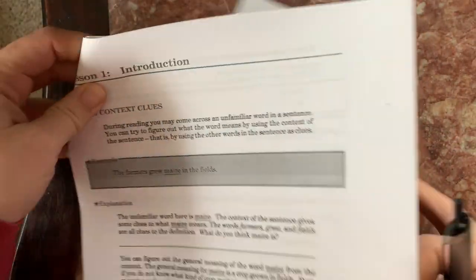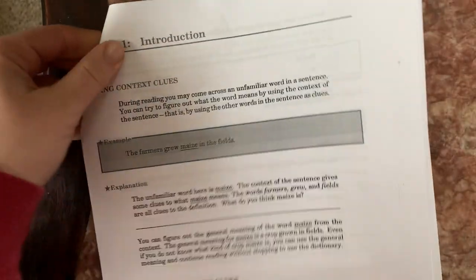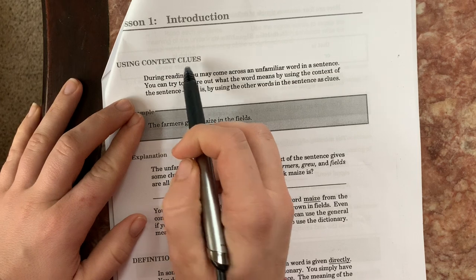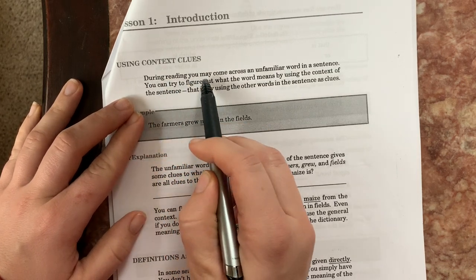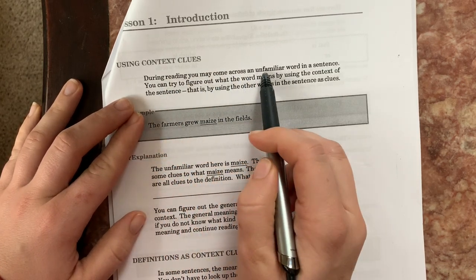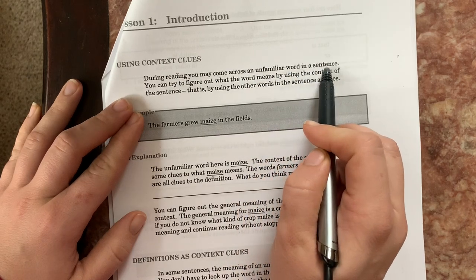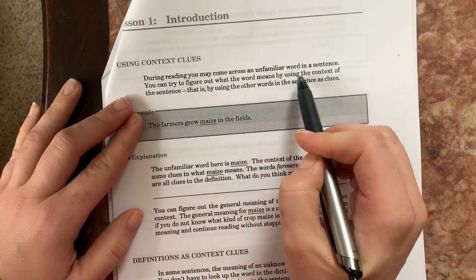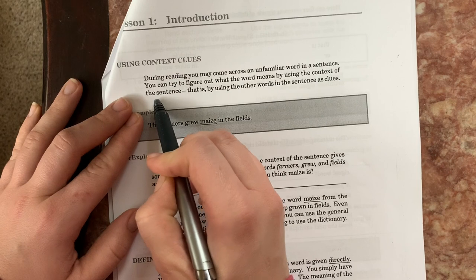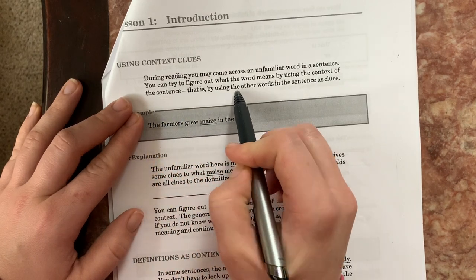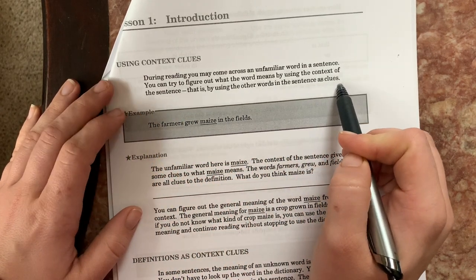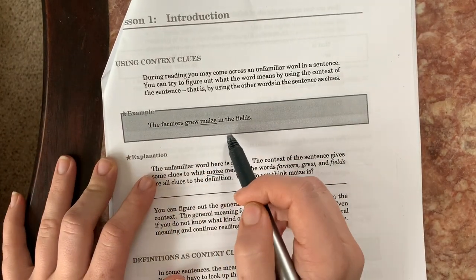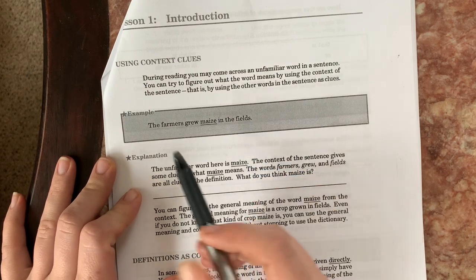All right, let me read this first. It looks important. Maybe it'll give me some definitions I should write down. Let's see. Using Context Clues. During reading, you may come across an unfamiliar word in a sentence. You can try to figure out what the word means by using the context of the sentence. That is, by using the other words in the sentence as clues. And I've got my example. The farmers grew maize in the fields.